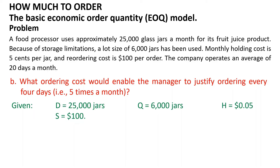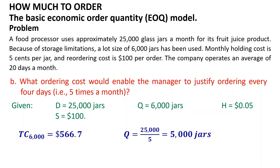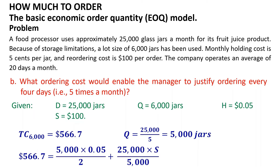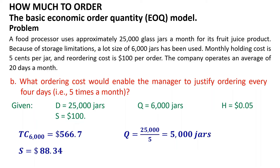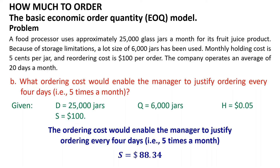For the second question, to find the ordering cost that would enable the manager to justify ordering every four days, we have to solve the total cost equation to find S using TC equals TC(6,000) and Q equals 5,000, as monthly demand equals 25,000 and the number of orders is 5. Solving this equation results in S equals $88.34. So the ordering cost that would enable the manager to justify ordering five times a month is $88.34.